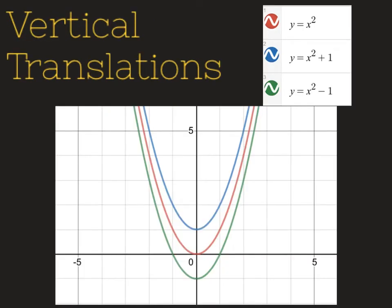Next up are translations. A vertical translation is just taking your whole graph and moving it up or down. Again, we have our red parabola which is our original parent function. In our blue parabola, we have a plus one that's just hanging on to the end of the function — it's not on the inside of the square, it's just by itself. That's telling me I'm taking that parabola and moving it up one. You can see I took my red parabola and moved it up.